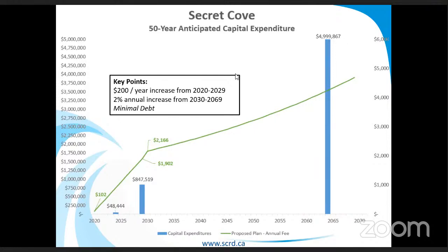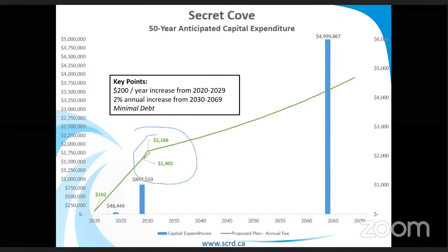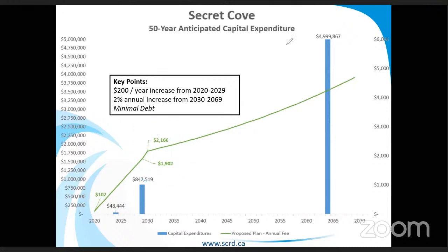The plan that we talked about last year was an aggressive plan where the goal was to accumulate reserve and pay off minimal debt. In this situation, there would be a $200 a year increase from 2020 to 2029 and a 2% increase after that. There is a small jump due to some debt financing, but it's similar in line to the $200 a year increase. One of the challenges with Secret Cove is this upcoming infrastructure in 2029-2030 with the treatment plant — it is a fairly large expense coming up soon. In this scenario, we consider paying off the debt in 10 years to allow us to accrue as much reserve as possible for future construction. This is the most conservative scenario and the safest from a financial perspective.